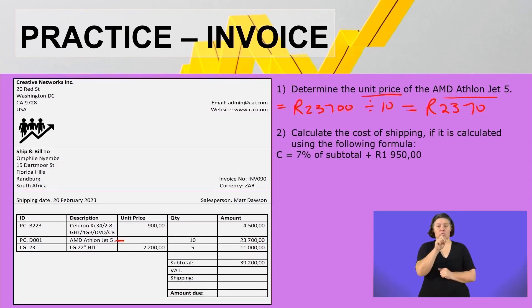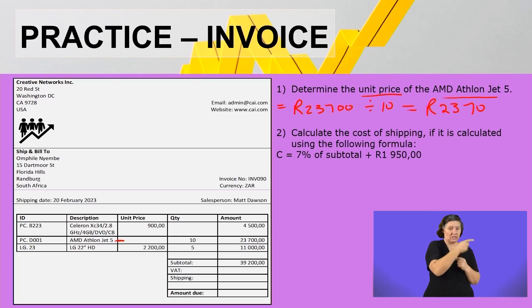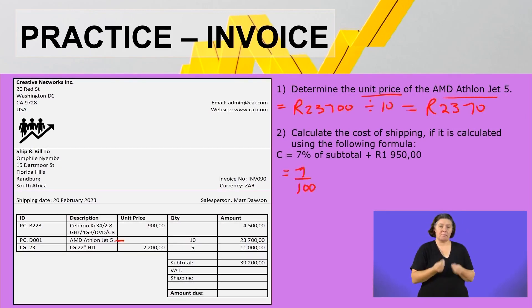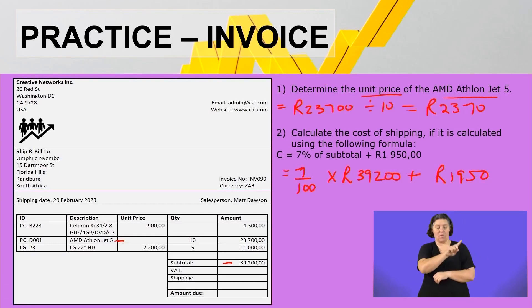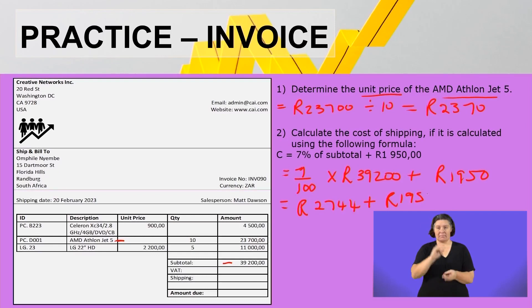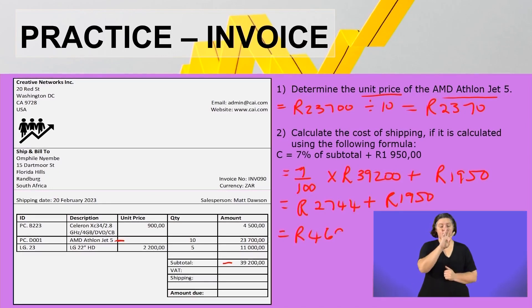Question number two: calculate the cost of shipping, using the formula: cost equals 7% of the subtotal plus 1,950. So 7 over 100 multiplied by the subtotal of 39,200 equals 2,744 rand, plus 1,950, giving a shipping cost of 4,694 rand. That's all for now — let's take a quick break, and after the break we'll do some application sums.